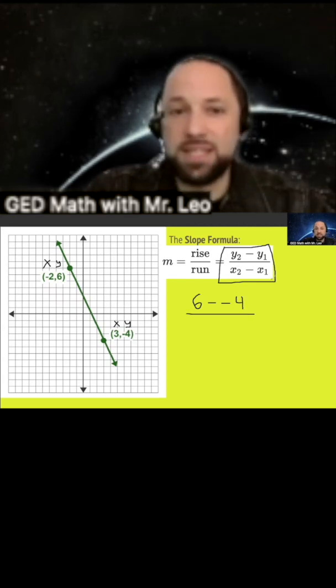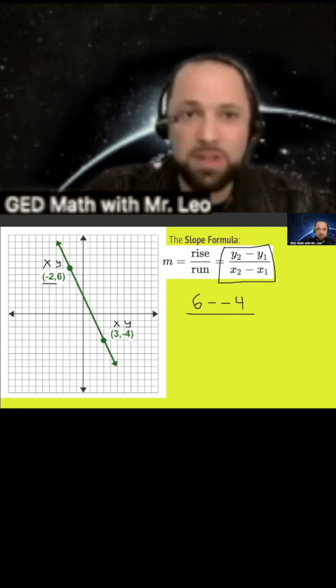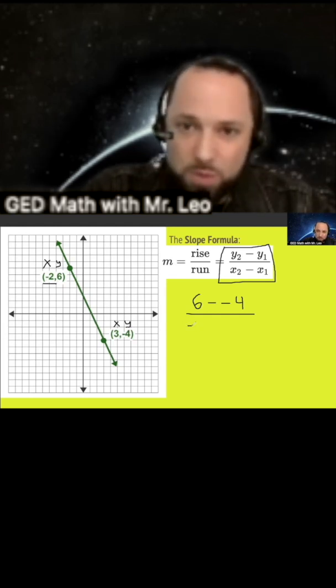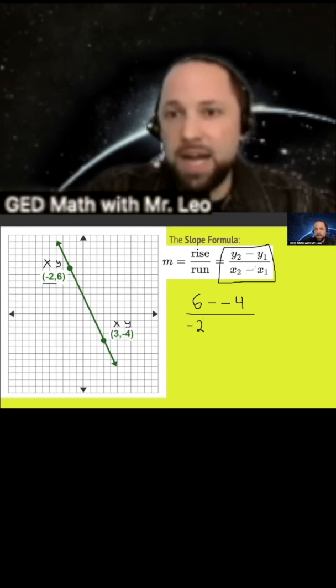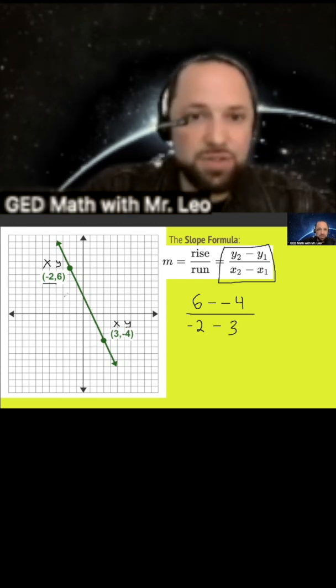Now let's do x minus x. Since I started with the 6, I must start with this number that goes with it. So down below, I start with a negative 2. Don't forget the minus sign from the equation and then the other x value. Negative 2 minus 3.